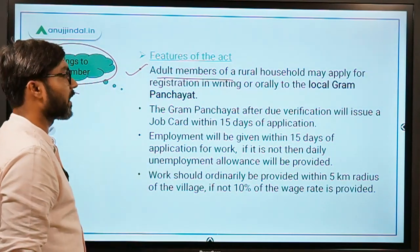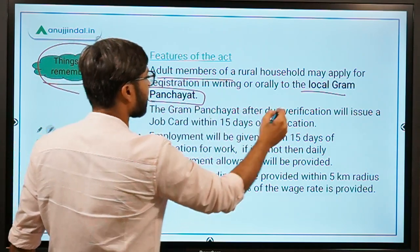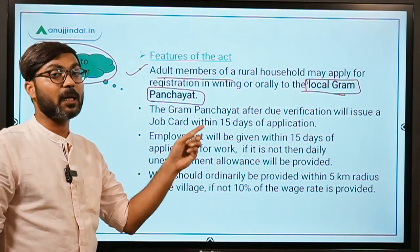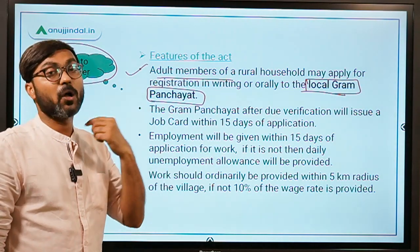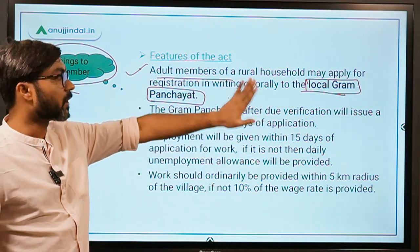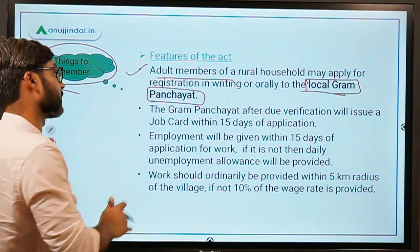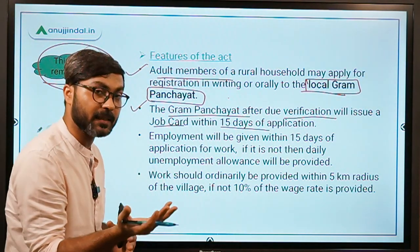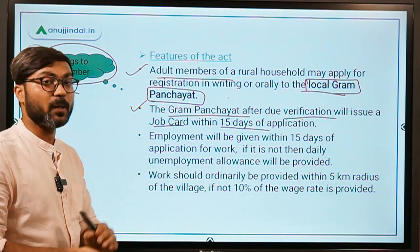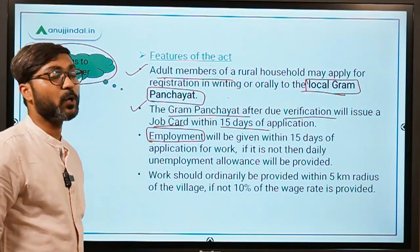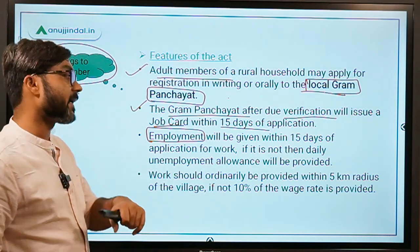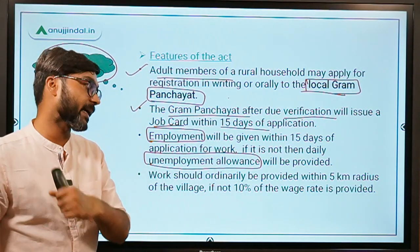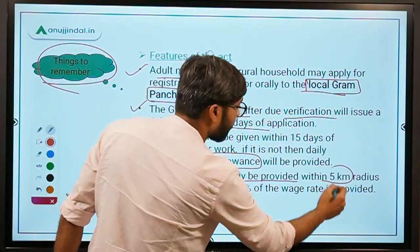The adult members of a rural household may apply for registration to the local gram panchayat. For registration, you need to go to the local gram panchayat. Once you have submitted the application, employment will be provided within fifteen days. If employment is not provided within fifteen days, you will get the unemployment allowance. Other than this, the work will be provided within a five kilometer radius of your home.